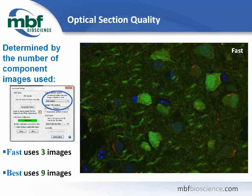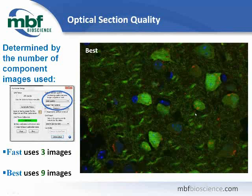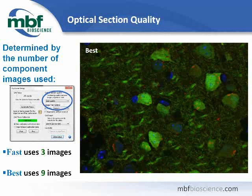The Fast Acquire uses three component images. Each increment in quality setting adds more component images to the final optical section. The Best Quality uses nine images. Here is an example of an image captured with Fast Acquire — it's a little bit grainy. So we change to Best Quality Optical Section and re-acquire, getting a much smoother, bright image with improved quality. The trade-off is longer acquisition time — in this case three times as long, gathering nine component images rather than three.